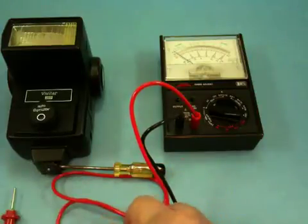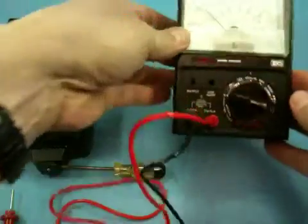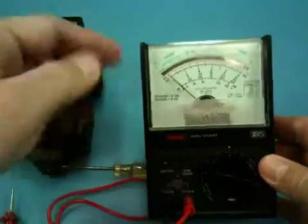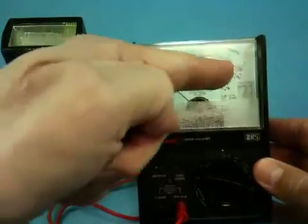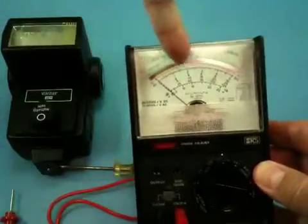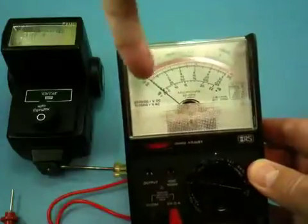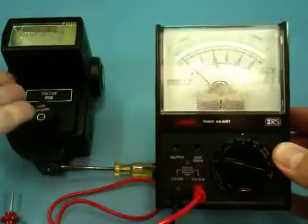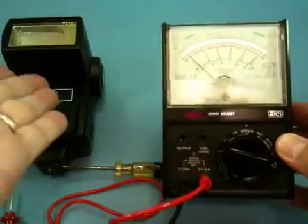Now, if your needle had jumped to any degree over toward the right, if it had moved anywhere in this direction, test is over. You've got a high voltage Vivitar 283.